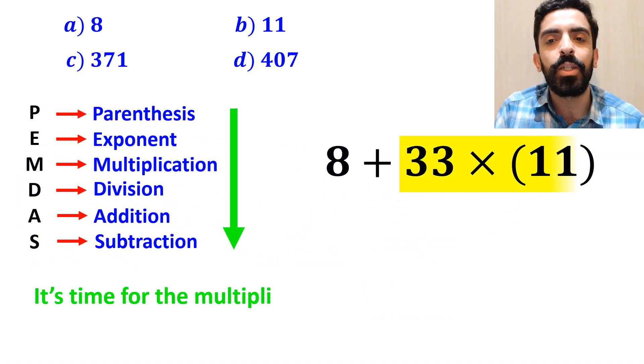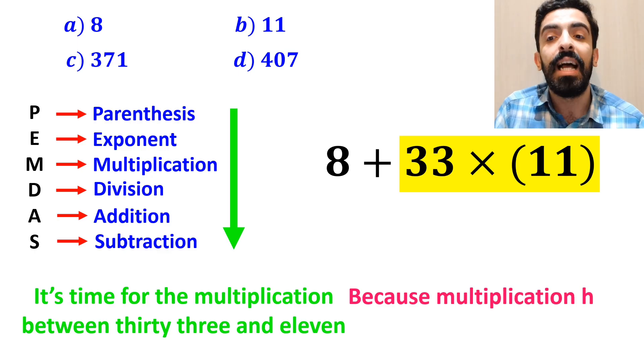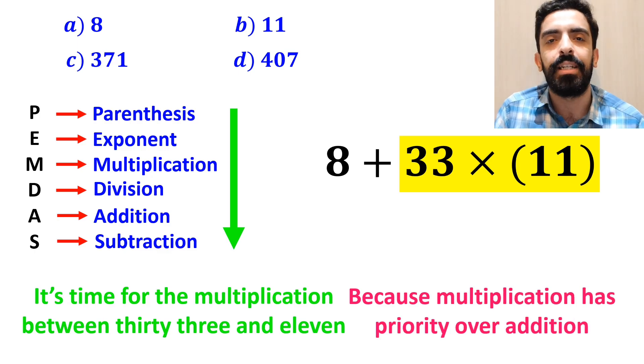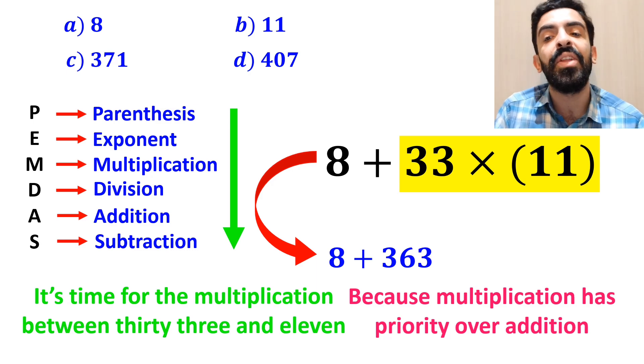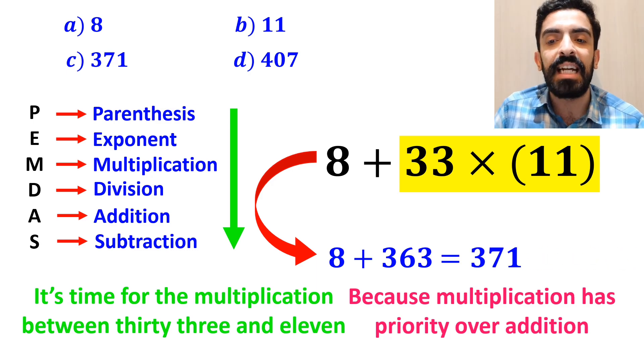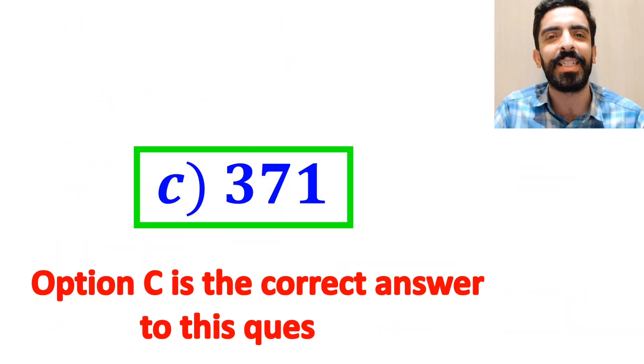And the next step, it's time for the multiplication between 33 and 11, because multiplication has priority over addition. So, instead of this expression, we can write 8 plus 363, which ultimately gives us the answer 371. That's great. Option C is the correct answer to this question.